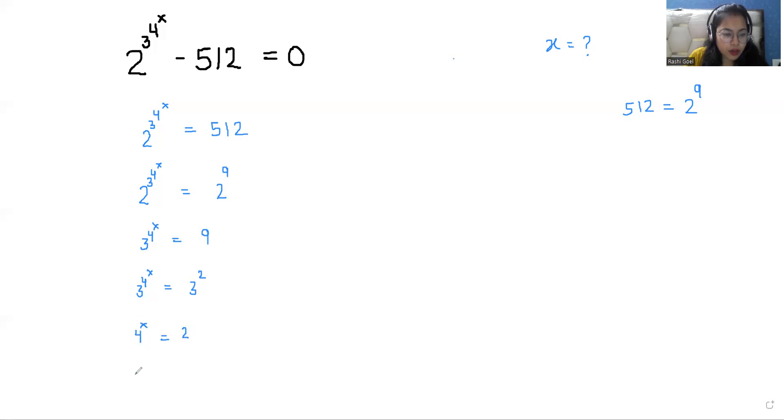Now 4 I can write as 2^2, and whose power is x, equals 2. Now we know the rule of exponents that (x^m)^n = x^(mn).